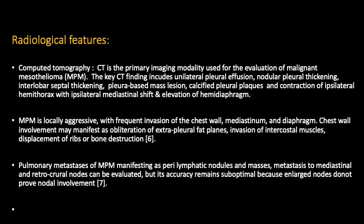CT features of mesothelioma include unilateral pleural effusion, nodular pleural thickening, interlobar septal thickening, or pleural-based mass lesion as in our case. It can be locally aggressive, with signs of invasion of the chest wall, mediastinum, and pleura. Chest wall invasion on CT appears as obliteration of extra-pleural fat planes and invasion of intercostal muscles, seen in our case. Displacement of ribs or bone destruction is fortunately not seen here. Pulmonary metastasis can appear as perilymphatic nodules, masses, or lymph nodes.